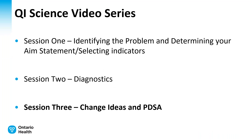Welcome to the third in our video series of three QIP and QI science videos. My name is Alice Strawn, and I am a Quality Improvement Specialist with Ontario Health. This is video three of a three-part series, which also included videos on how to identify your problem, determine your aim and select indicators, diagnose root causes, and identify change ideas and process measures for the indicators chosen for your QIP — the focus of this video.